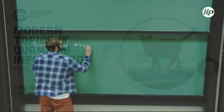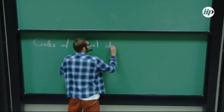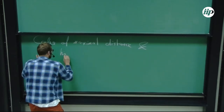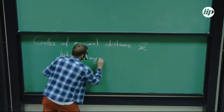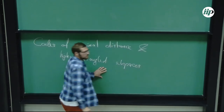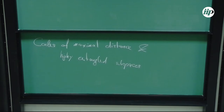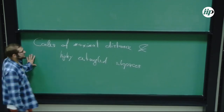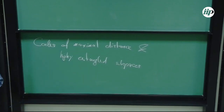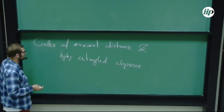Codes of maximal distance and highly entangled subspaces. I should take the opportunity at the beginning to thank the organizers. This is joint work with Markus Grassl from Erlangen. I will talk about the connections of these codes of maximal distance — meaning they have very optimal properties — called quantum maximal distance separable, or quantum MDS codes.